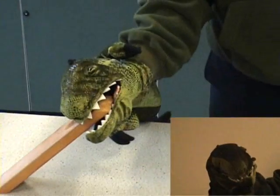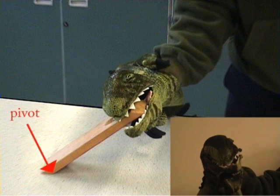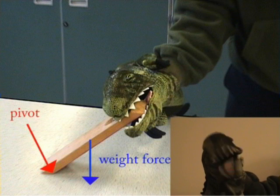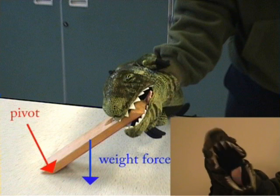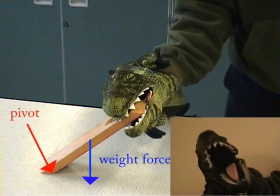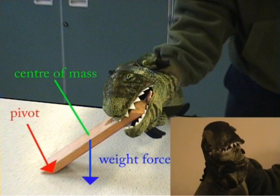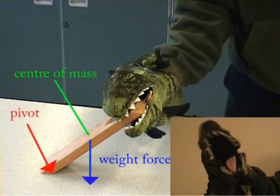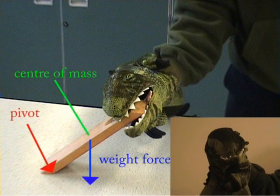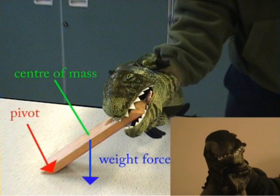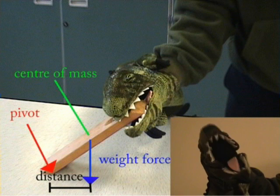When a piece of wood rests on the desk, the bottom bit acts like a pivot. The weight of the wood, which is caused by the force of gravity, acts as if it comes from one point, which we call the centre of mass. Obviously, the mass isn't really just in one point — it's spread throughout the wood — it just behaves as if it comes from one point. So we have a force acting at a certain distance from the pivot, and this creates a turning effect.